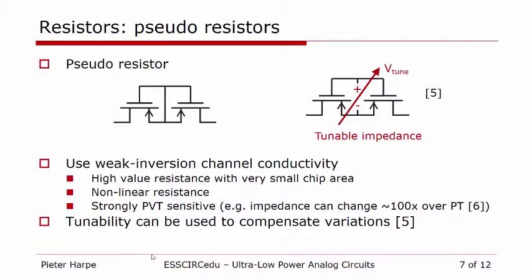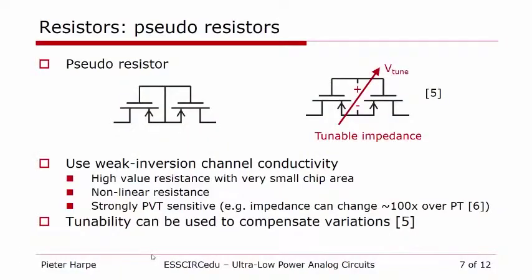Pseudo resistors also have some disadvantages. First, these resistors are highly nonlinear. Second, as we saw before, they suffer from PVT variations, which can change the impedance by a factor of 100 over the corners, making it very hard to build a predictable circuit. What you can do about this is make the gate-source voltage tunable, and if you tune this you can compensate for the variation of impedance. If you do it in a smart way, you can do this on-chip — for instance with an on-chip biasing network or on-chip feedback to stabilize the impedance over the different variations.